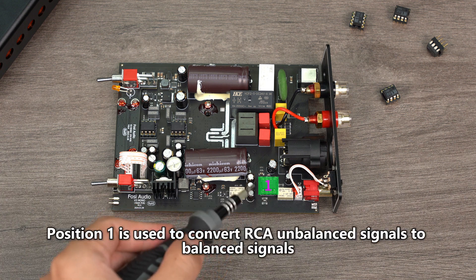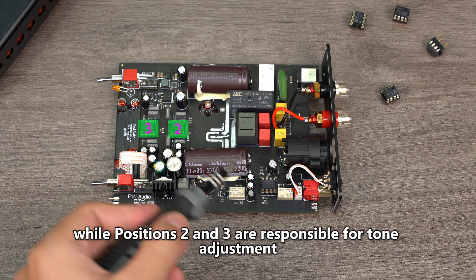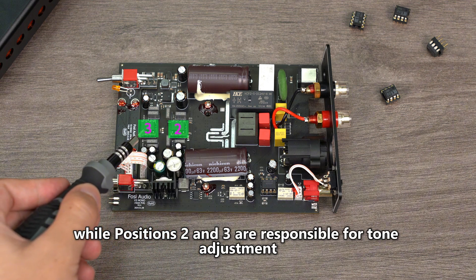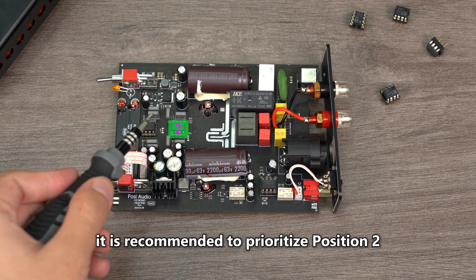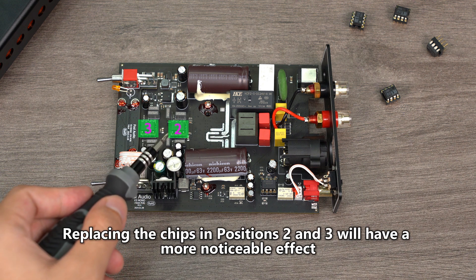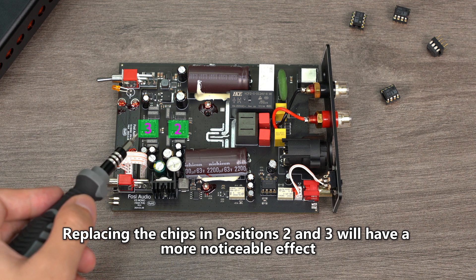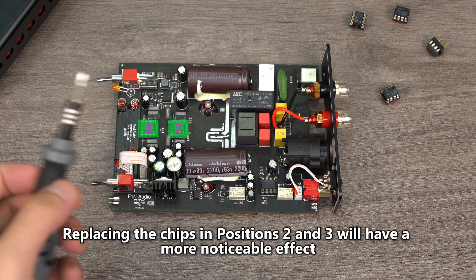Position 1 is used to convert RCA unbalanced signals to balanced signals, while positions 2 and 3 are responsible for tone adjustment. If you plan to replace the op-amp chips, it is recommended to prioritize position 2. Replacing the chips in positions 2 and 3 will have a more noticeable effect.